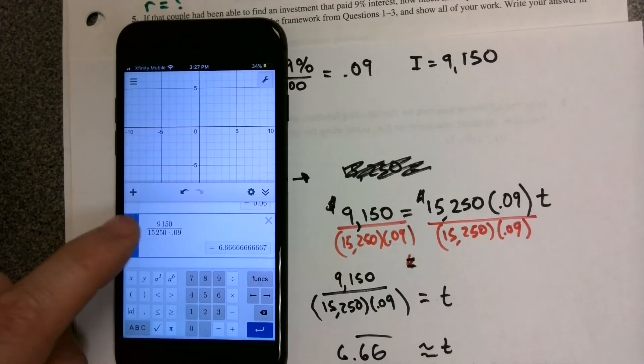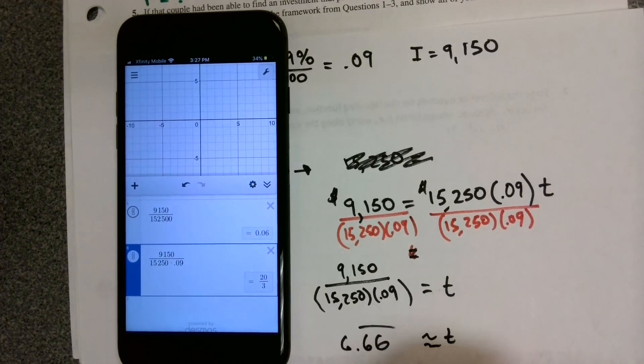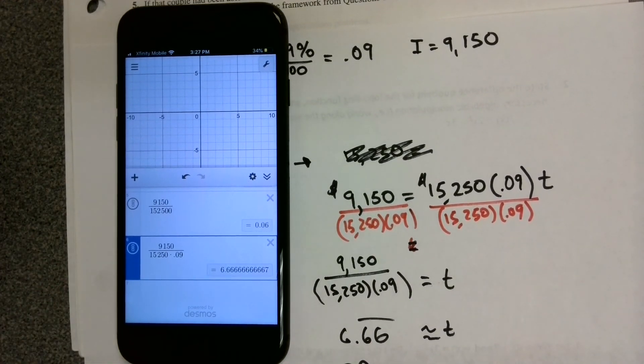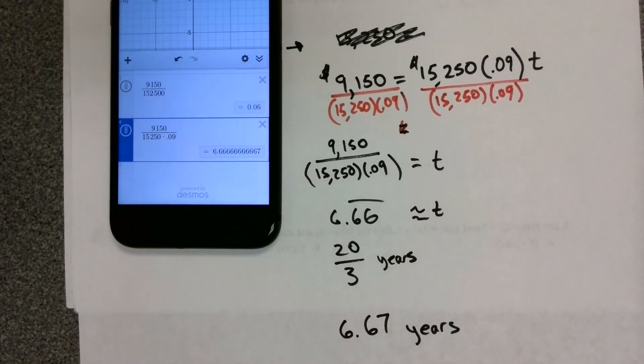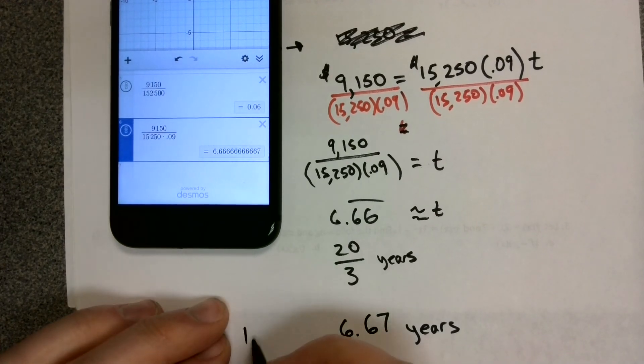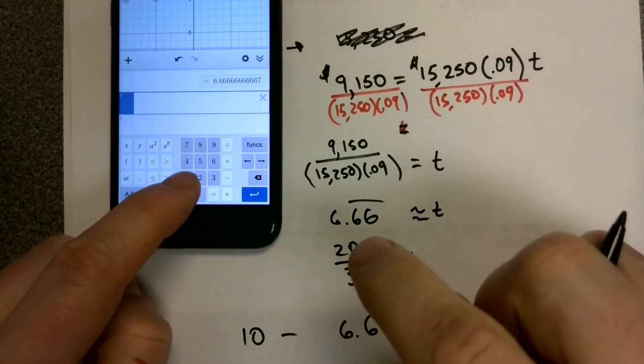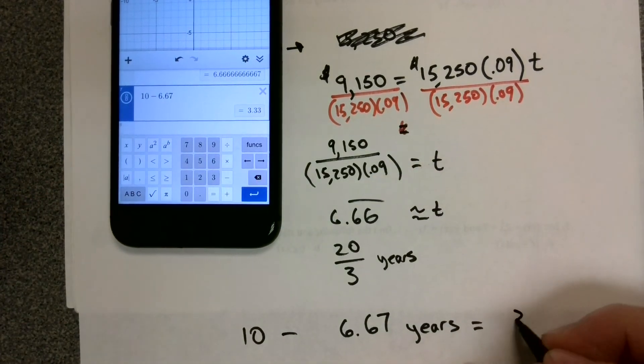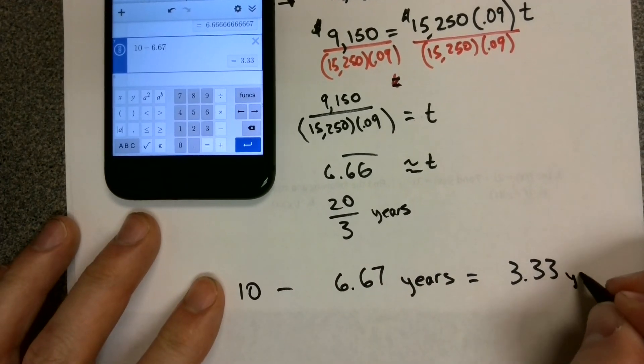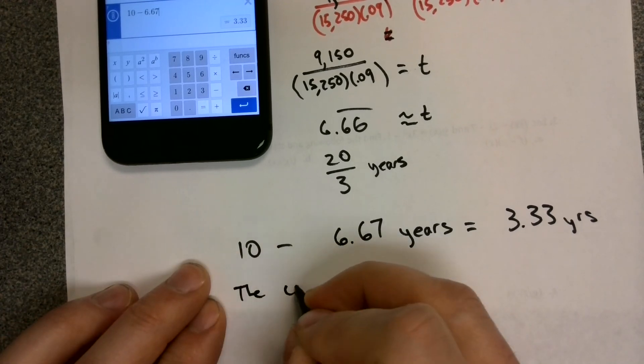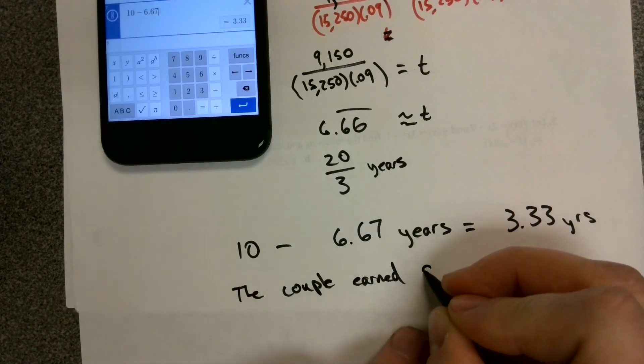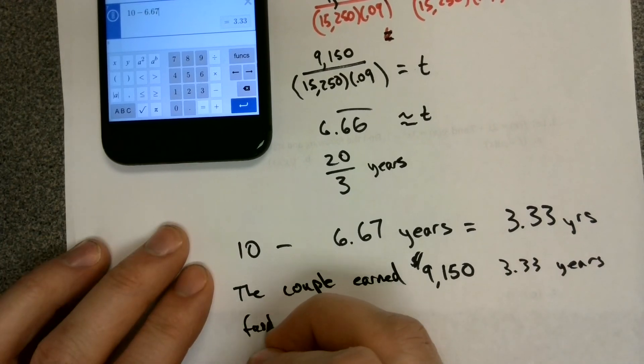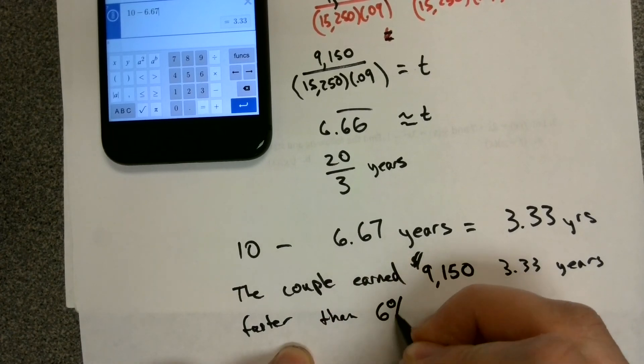That number is kind of ridiculous. What we really want to say is that it's going to take approximately 6.67 years to earn that same amount of money. Notice it took us 10 minus 6.67 years less time to earn this money. So we earned it 3.33 years faster. So the couple earned $9,150, 3.33 years faster than the 6% investment.